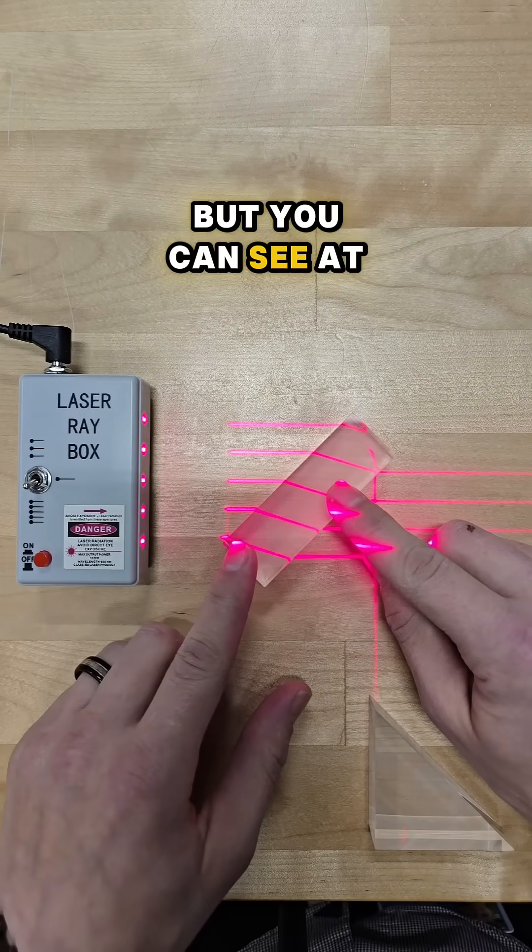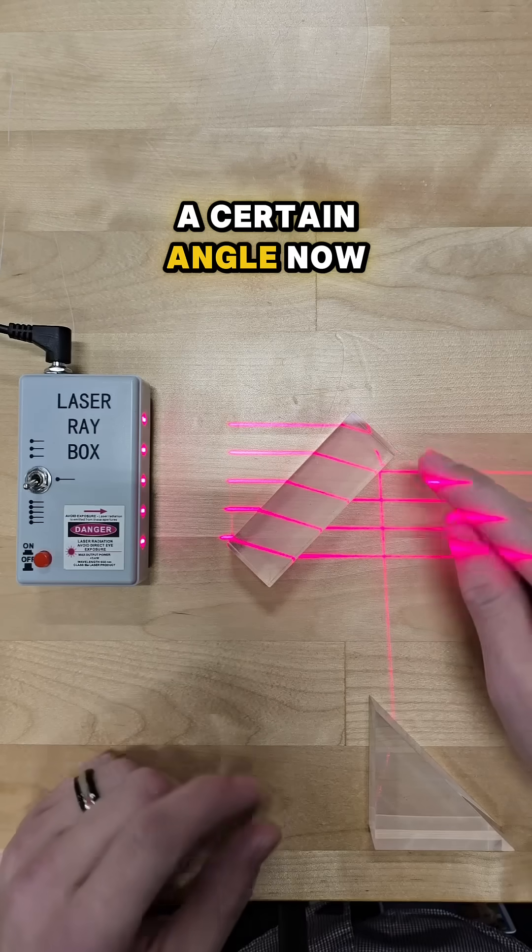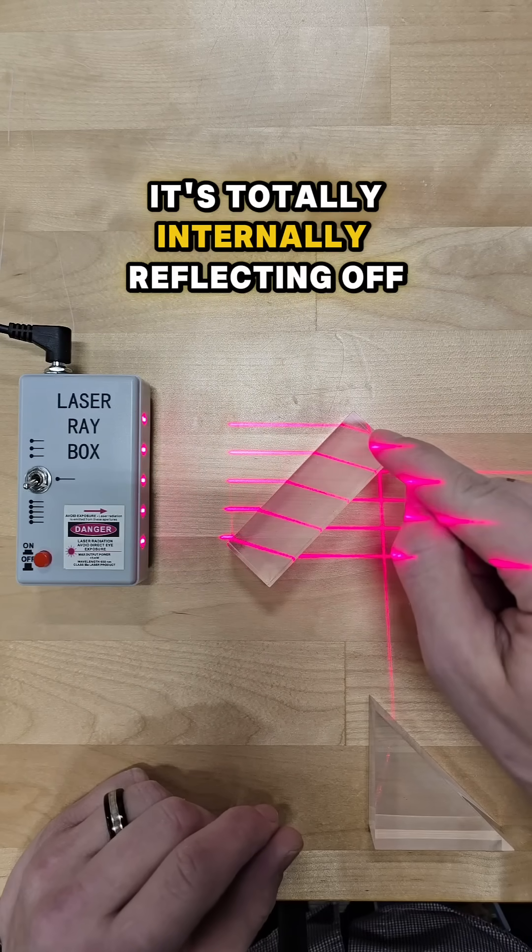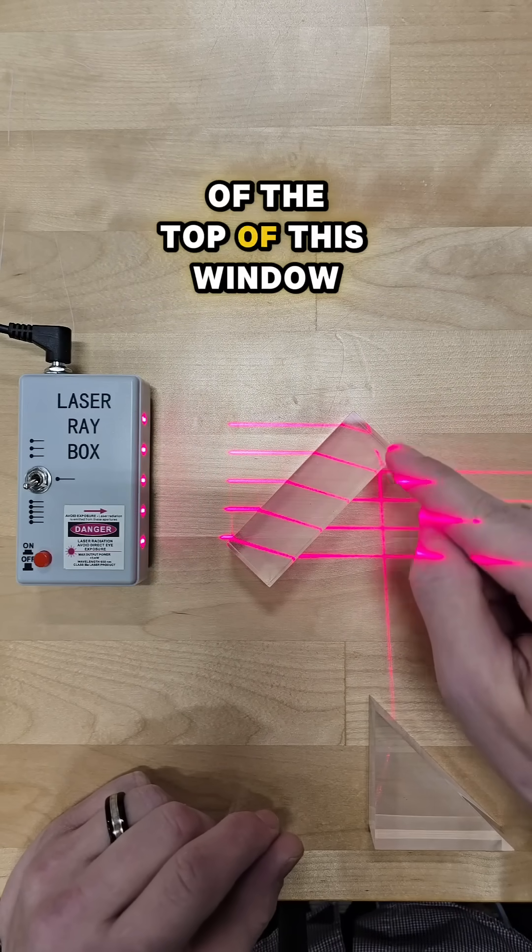But you can see at a certain angle, now one of these light rays isn't just bending and going straight through, it's totally internally reflecting off of the top of this window.